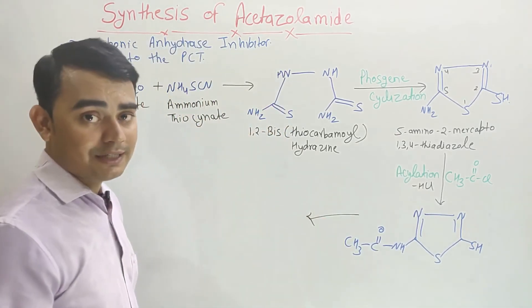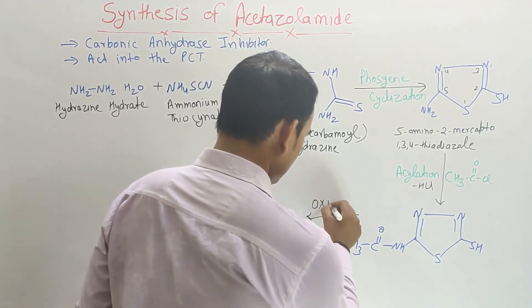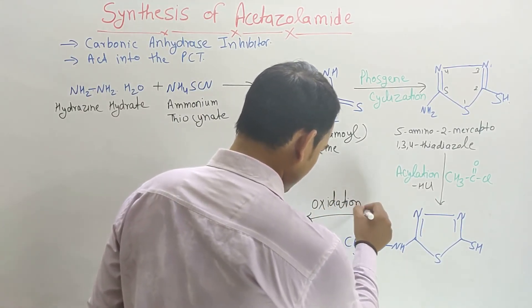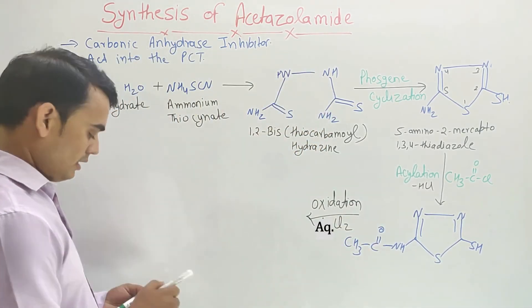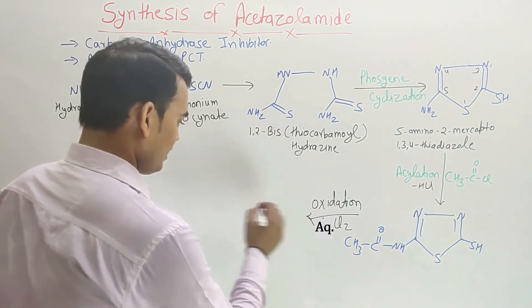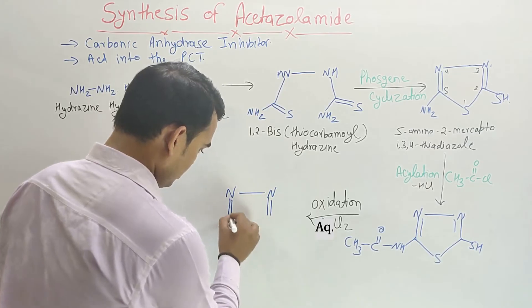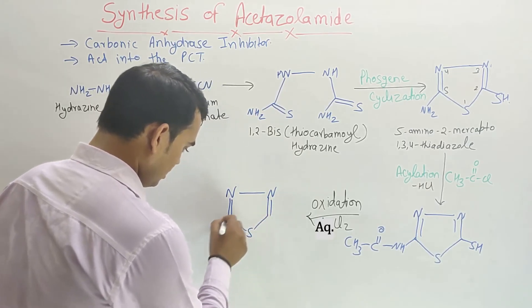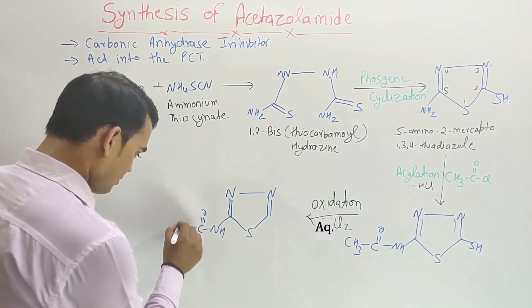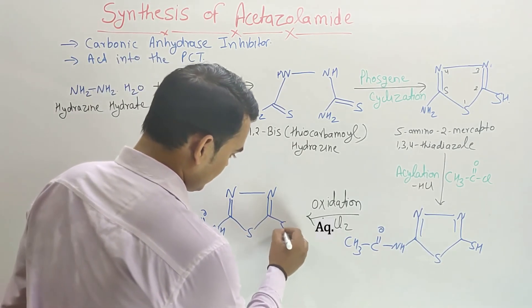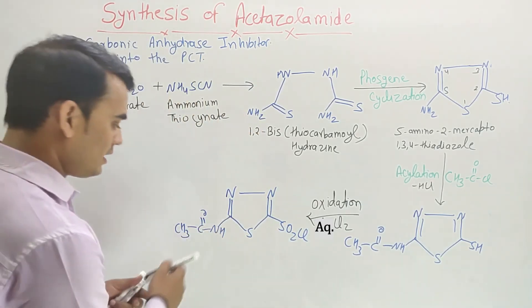Oxidation in the presence of Cl2. Then what happened? Here it becomes nitrogen, nitrogen. Here double bond. Here it has H, here it has NH-CO-CH3. Here it becomes SO2Cl.